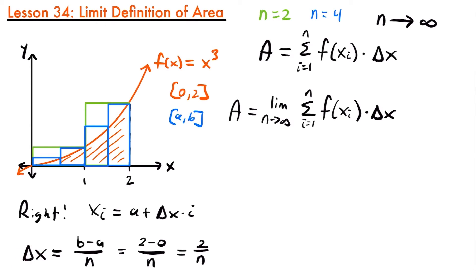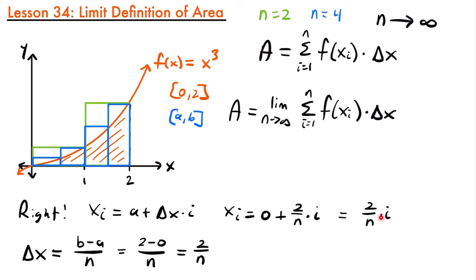Now that delta x equals 2/n, we can plug that into our definition for x sub i along with the lower bound a. So x sub i equals 0 plus 2/n times i, which simplifies to 2i/n. We're not plugging in specific values of i because we're looking at n approaching infinity — unlike when we had four rectangles with four specific x sub i values, here we have an infinite number of rectangles, so we leave i as is.